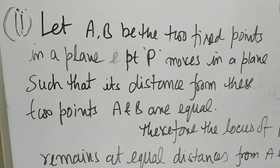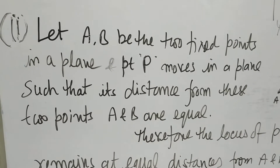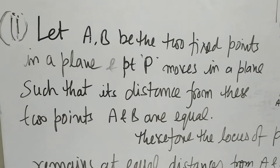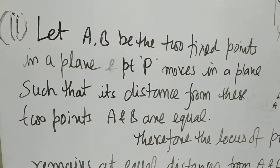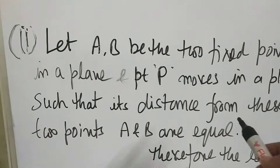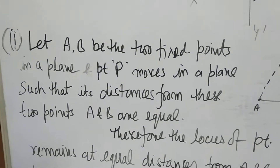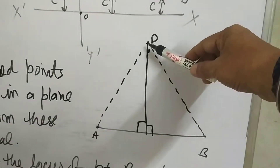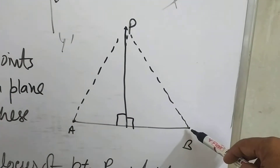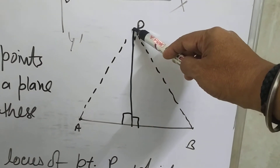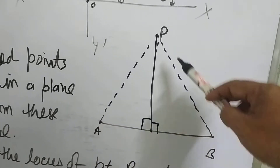Let A and B be two fixed points in a plane, and point P moves in a plane such that its distances from these two fixed points A and B are always equal.